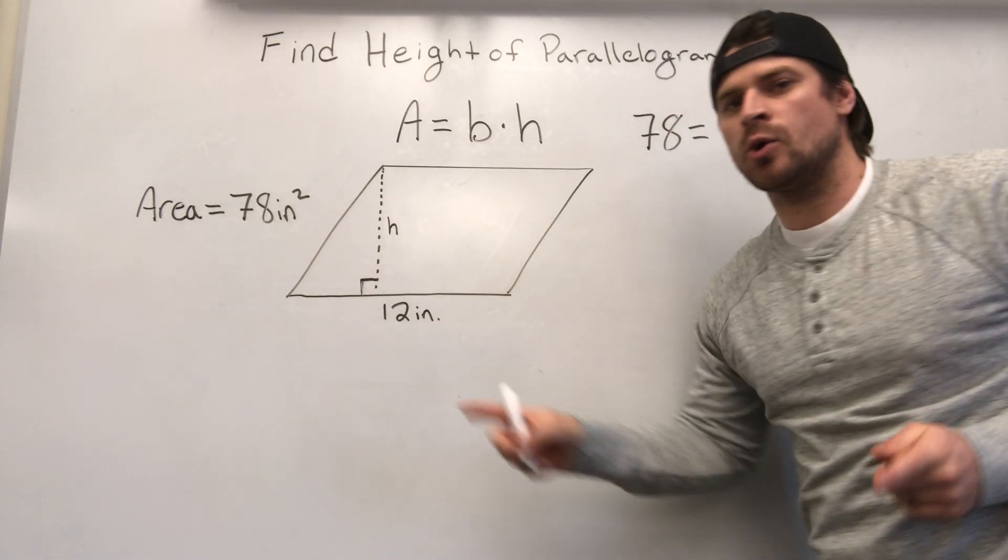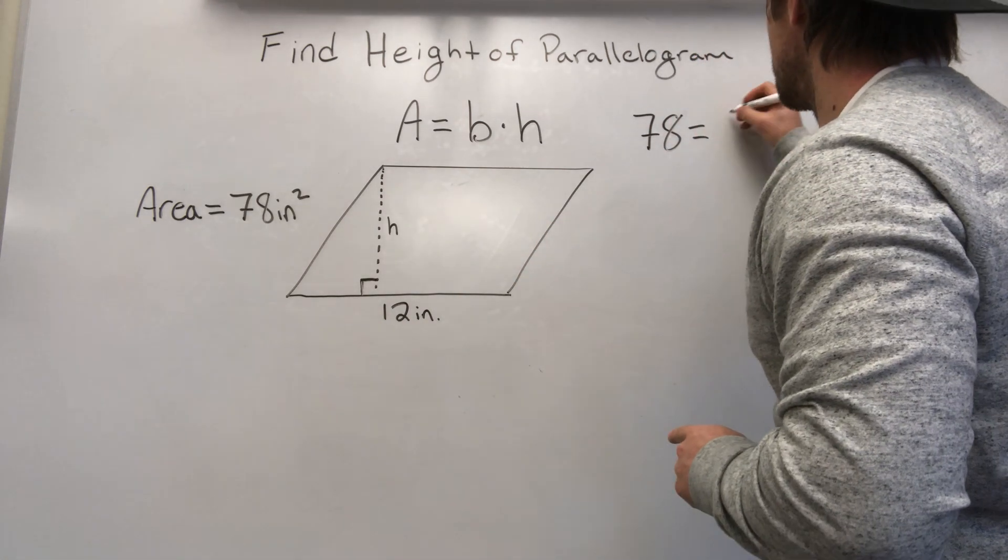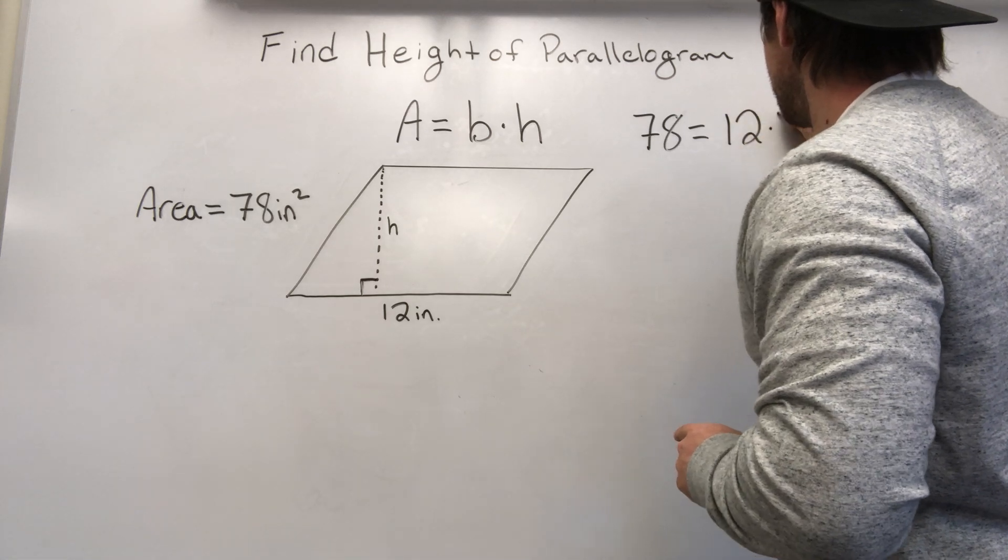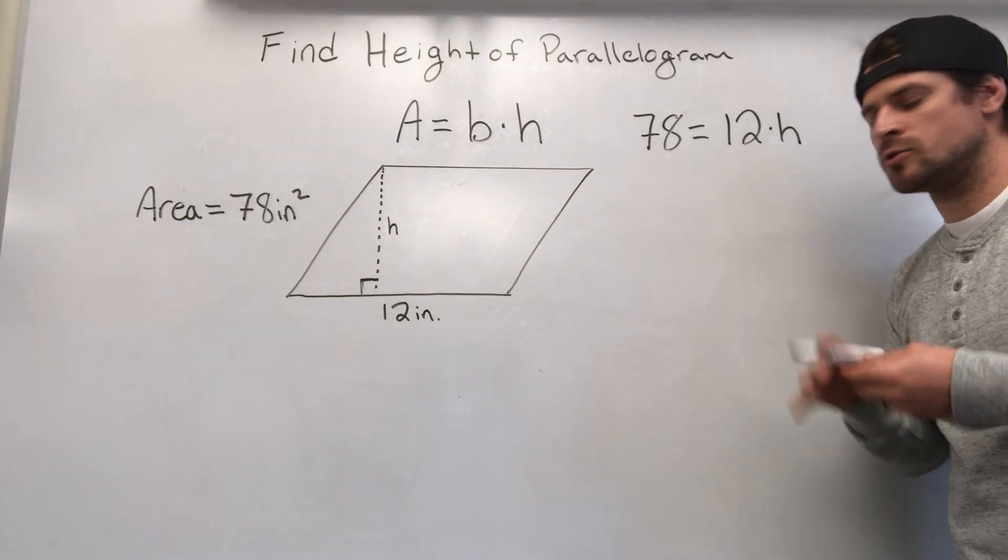Out of these two, which one do we know? We know the base. The base is 12. So we're going to put equals 12 times h. Now, in algebra, we no longer put the dot here. So we just put a 12 next to an h.